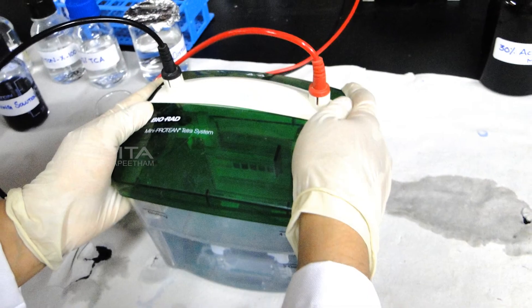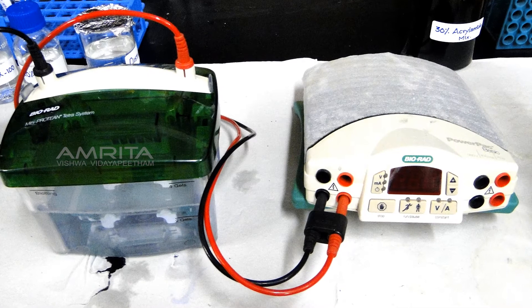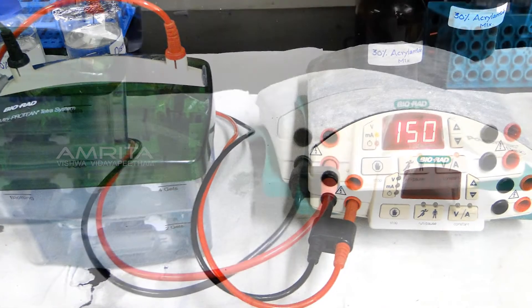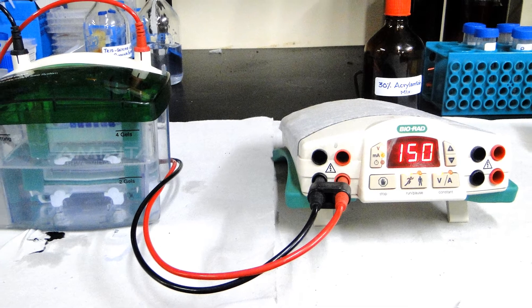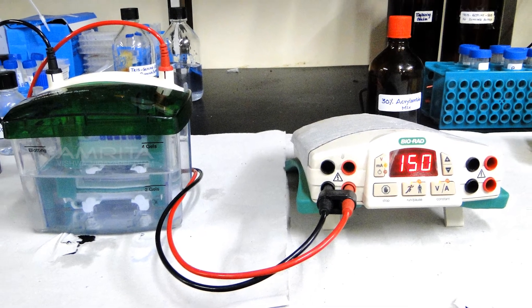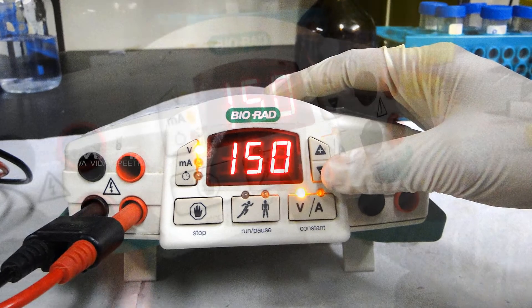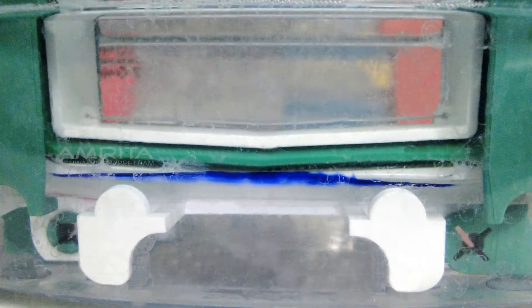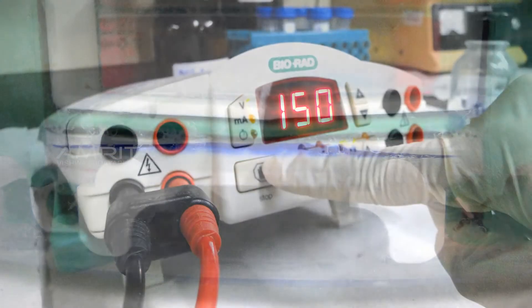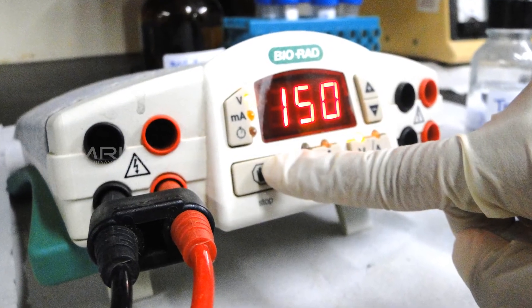Close the lid of the gel tank and connect the wires to electrical circuit. Make sure the connection is proper, i.e., black lead to black and red lead to red. Now set the voltage at 150 volts and run for about 1 hour or until the dye front runs to the end of the gel. Now switch off the power supply and disconnect the electrical leads.